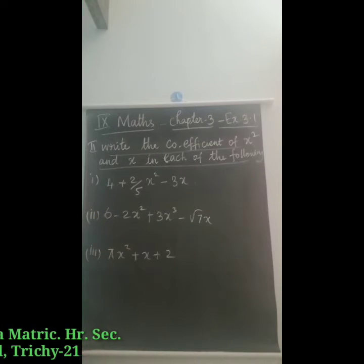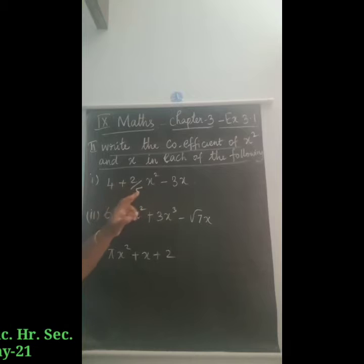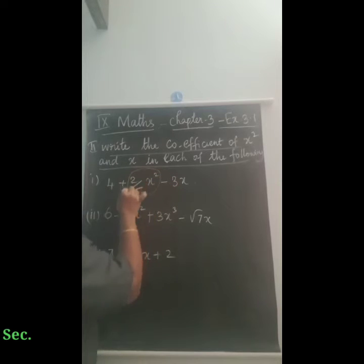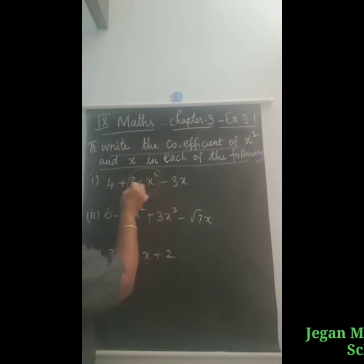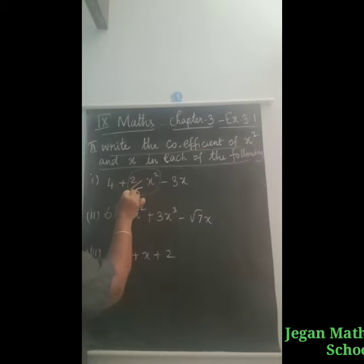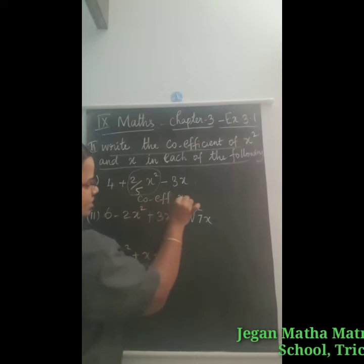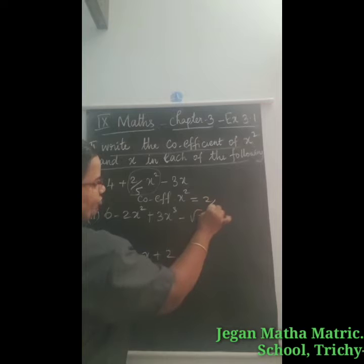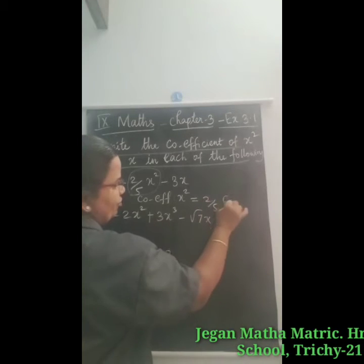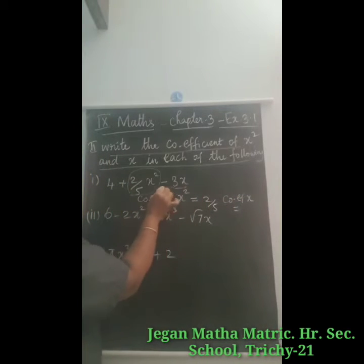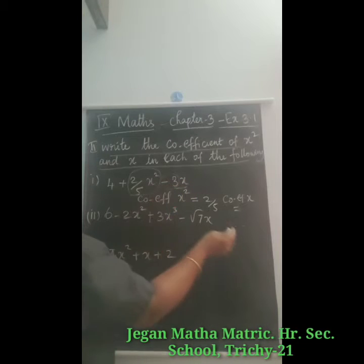Write the coefficient of x squared and x in each of the following. First one is 4 plus 2 by 5 x squared minus 3x. The coefficient of x squared is the constant term attached to that variable, so the coefficient of x squared is equal to 2 by 5. The coefficient of x is minus 3.